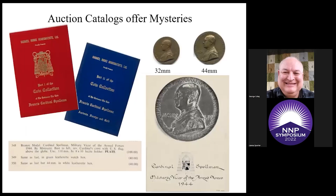For many years, I've known about the 32-millimeter and 44-millimeter examples of the Archbishop Spellman medal as military vicar. I've never seen a 110-millimeter version, except for this listing and illustration from the Harmer Rook sale of his collection. The sale catalog was printed, but the auction was canceled. I've been told that the collection remains mostly intact and is still owned by the Archdiocese, but as yet nobody's let me go in to see the medal.